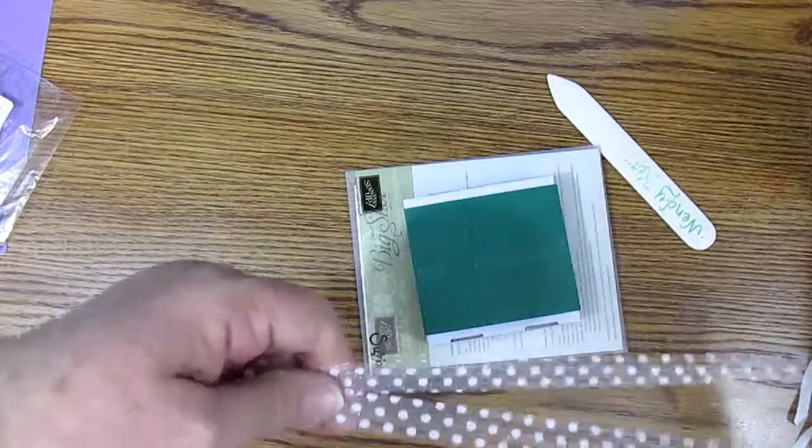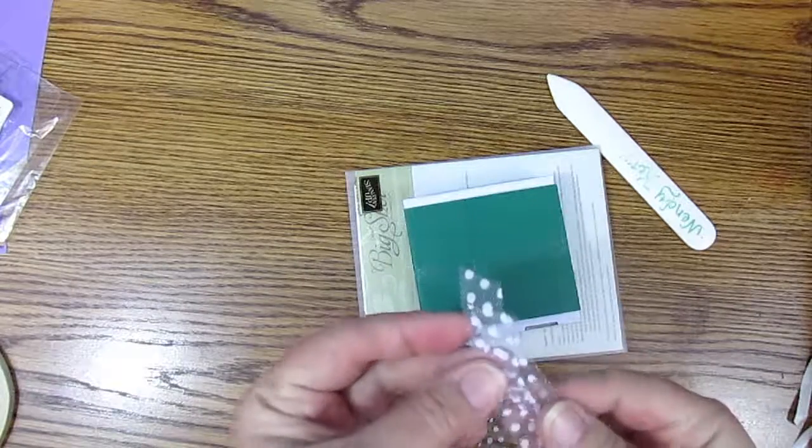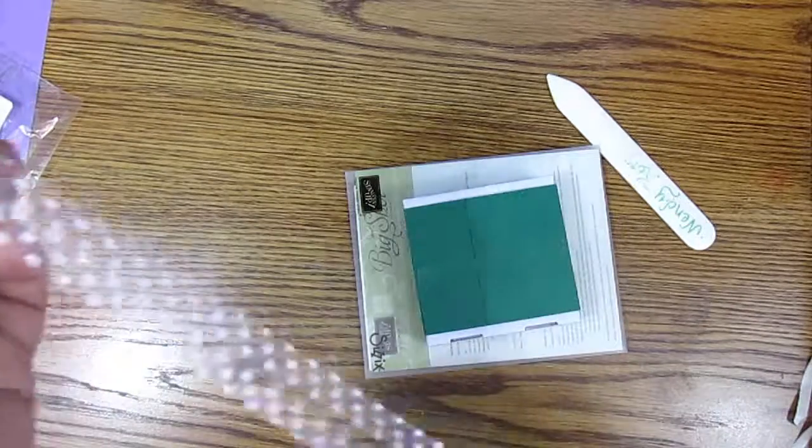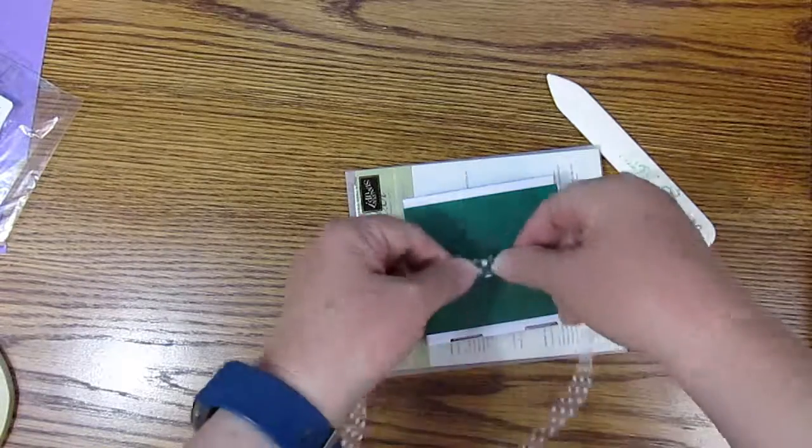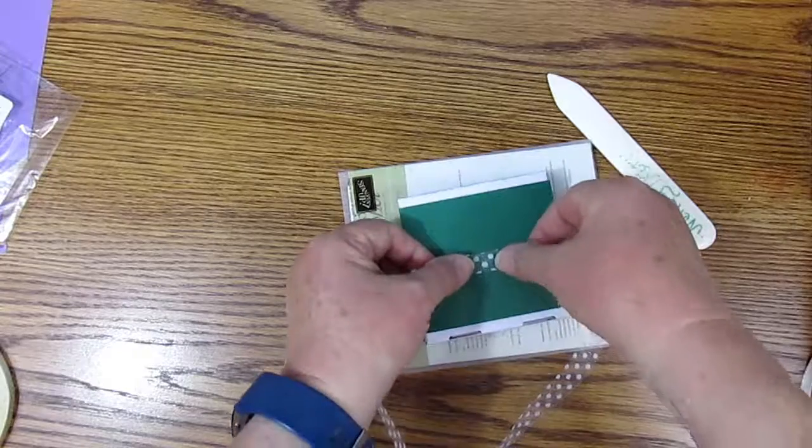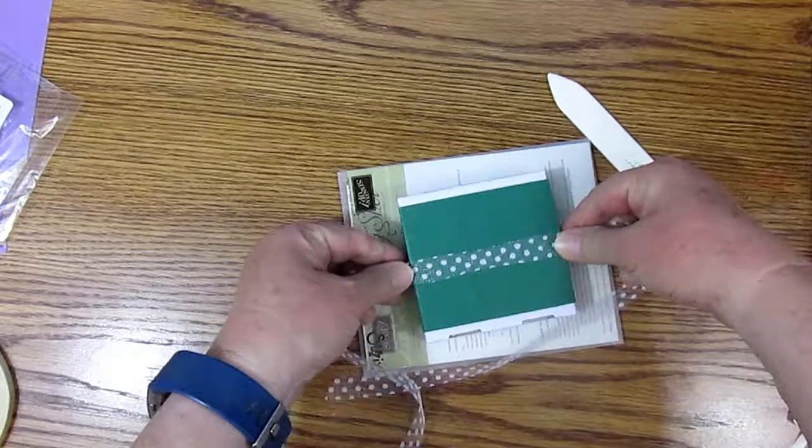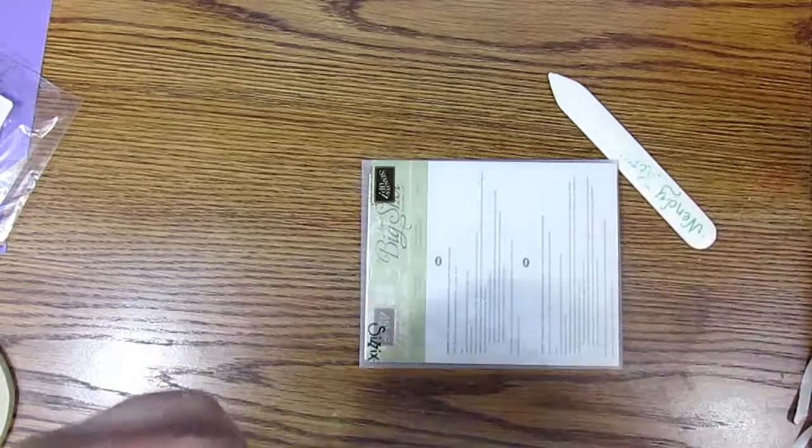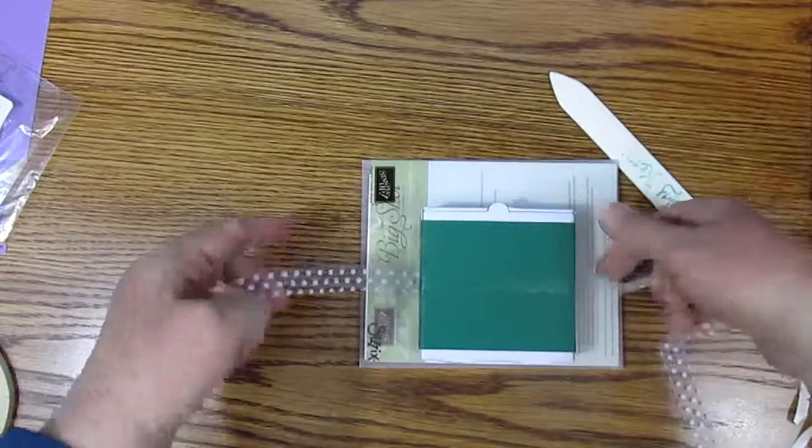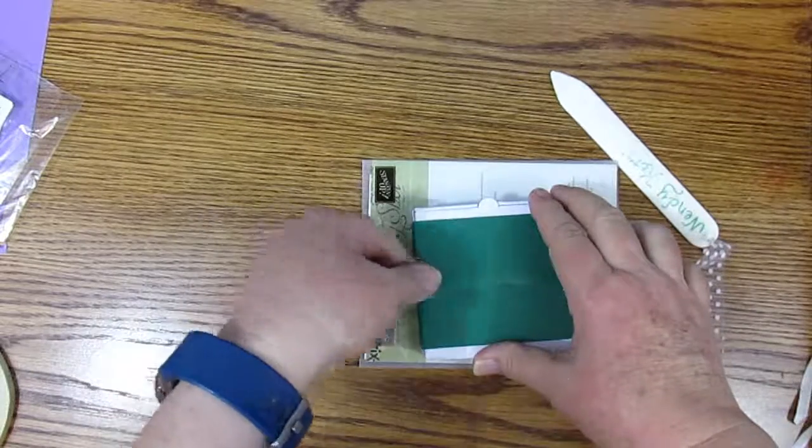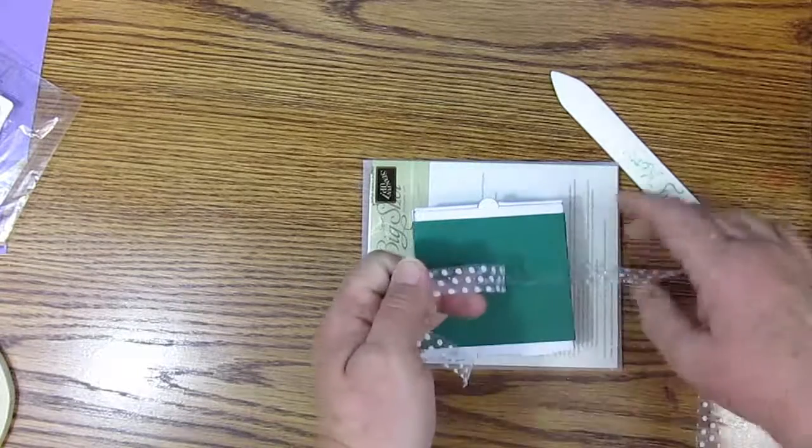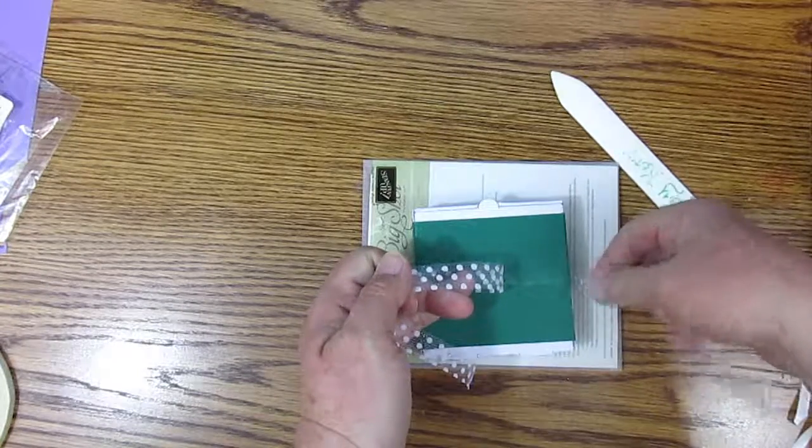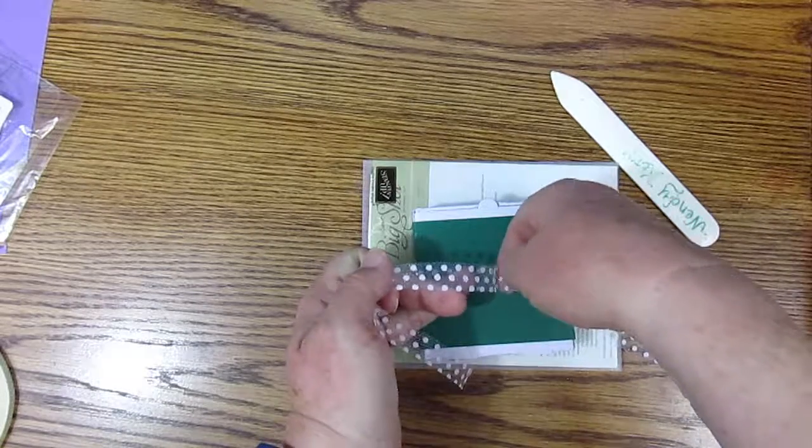Alright. So fold your ribbon in half. And the bottom is facing up. And we will put this center part in the center back. Run it along the snail to about the middle. And about the middle.